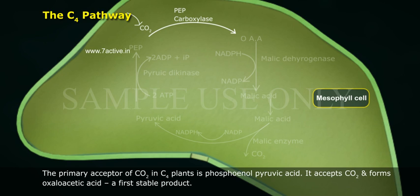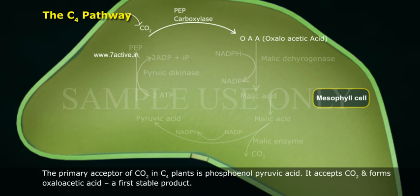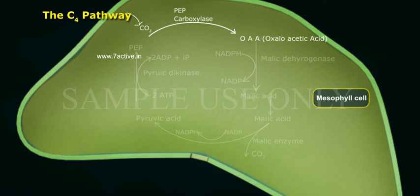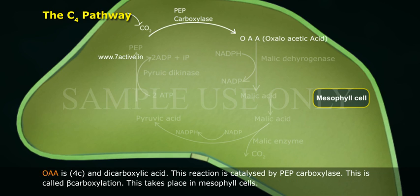The primary acceptor of CO2 in C4 plants is phosphoenolpyruvic acid (PEP). It accepts CO2 and forms oxaloacetic acid (OAA), the first stable product. OAA is a 4-carbon dicarboxylic acid. This reaction is catalyzed by PEP carboxylase.